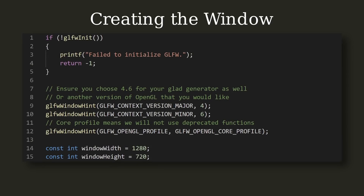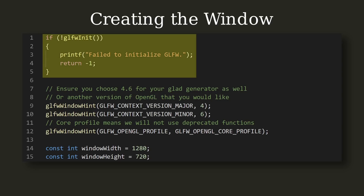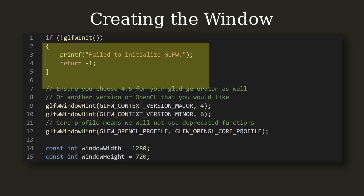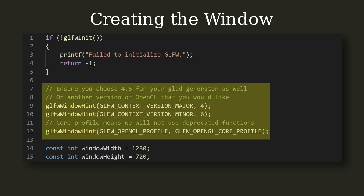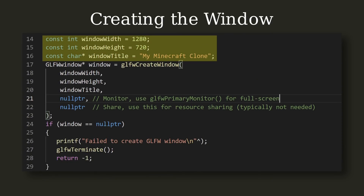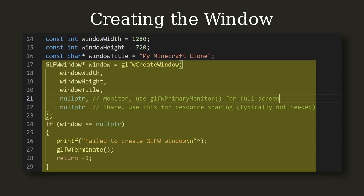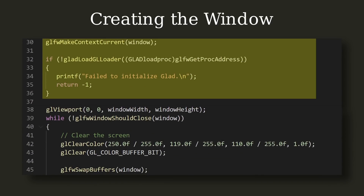Finally, we can use our library to get a window up and running. For GLFW, this is pretty simple — we can write a few lines of code that look like this. First, we call GLFW's initialization function; if that fails, we log an error and return. Next, we provide the window hints, where you specify things like whether you want to resize or minimize the window. After that, we declare a few helper variables for window creation, then we try to actually create the window, giving it the width, height, and title. The last two parameters are for the monitor and the window you'd like to share resources with. After checking if window creation succeeded, we make its context current and initialize GLAD — making the context current is important to ensure OpenGL flushes its rendering results to our window.